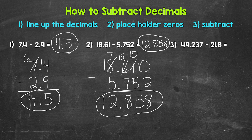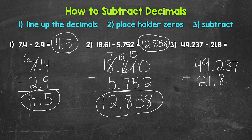Lastly, moving on to number three, we have 49 and 237 thousandths minus 21 and eight tenths. Now that we have our decimals lined up, we can see that one number goes to the thousandths place and the other only goes to the tenths. So let's use placeholder zeros so that both of these go to the thousandths — we'll need two placeholder zeros right here. Now both numbers go to the thousandths place and we are able to subtract.